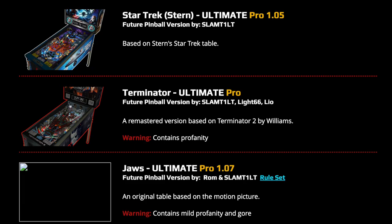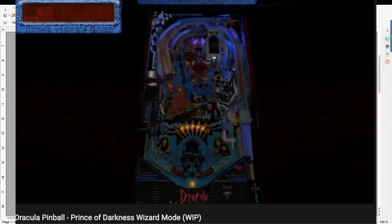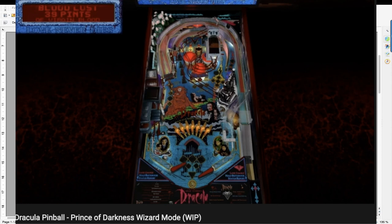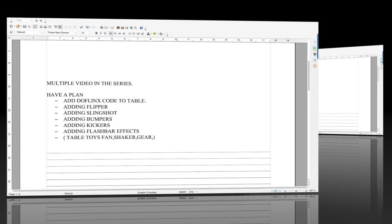Number two, ask yourself: is there going to be any future update for that table? Slam Tilt — I love his table, this guy's a master — but Slam Tilt does a lot of revisions, sometimes up to six versions of the same table. He adds features, events, a bunch of stuff. So if you're doing version one of Dufflinks coding for his table, as soon as he releases version two, it's not going to work anymore. You need to redo the work because there are new triggers, new elements. So it's basically you've got to redo the work.